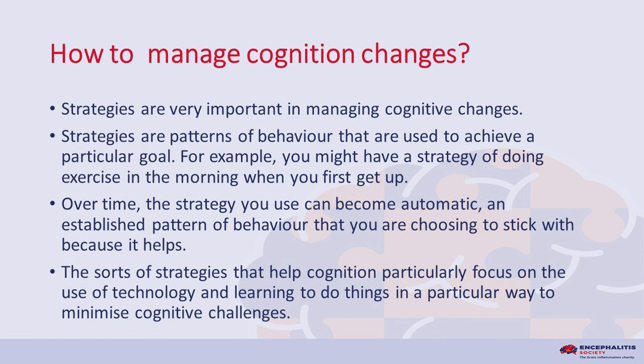How to manage cognition changes. Strategies are very important in managing cognitive changes. Strategies are patterns of behavior that are used to achieve a particular goal. For example, you might have a strategy of doing exercise in the morning when you first get up. Over time, the strategy you use can become automatic — an established pattern of behavior that you are choosing to stick with because it helps. The sorts of strategies that help cognition particularly focus on the use of technology and learning to do things in a particular way to minimize cognitive challenges.